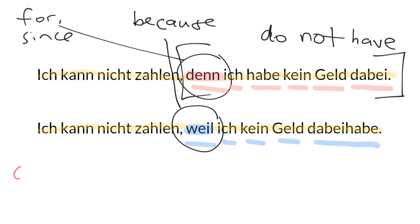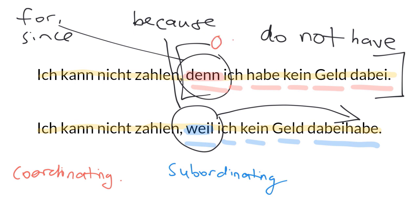Denn is what's called a coordinating conjunction. And weil on the other hand is what's called a subordinating conjunction. They're big words, but they're helpful categories. One of the main things that they mean is that a conjunction like weil is going to send the verb to the end of the sentence or the end of the clause. Whereas denn stands in zero position. We have a pronoun in first position and as always a verb in the second position.